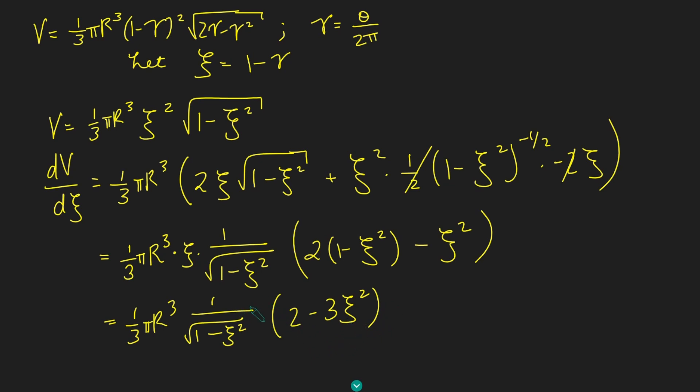If we just simplify this, a third pi r cubed 1 over the square root of 1 minus psi squared. And then if I expand this bracket here, I get 2 minus 3 psi squared. We're trying to maximize the volume here. So we've differentiated and we need to set this equal to 0 and we're looking for solutions here. One solution is clearly when psi equals 0. But let's just think about what this means. If psi equals 0, that means gamma equals 1. And that means theta equals 2 pi. And that kind of is a little bit nonsensical. Our cone would be extremely, the base radius would be extremely small and it'd be a relatively tall cone. And so the volume would be 0. So this corresponds to a minimum. So we're not interested in that.